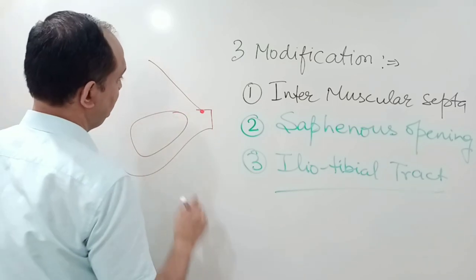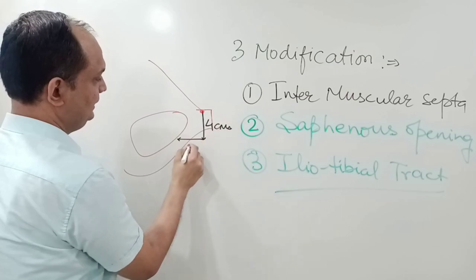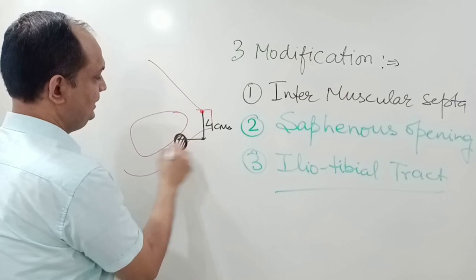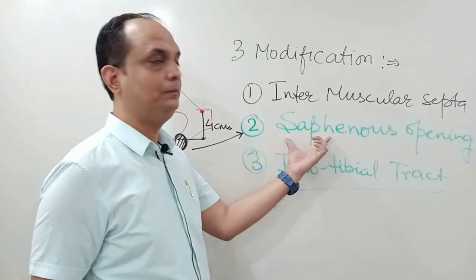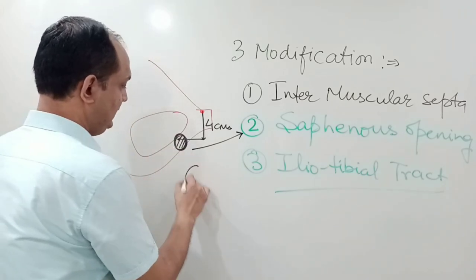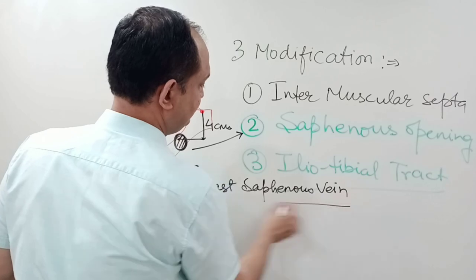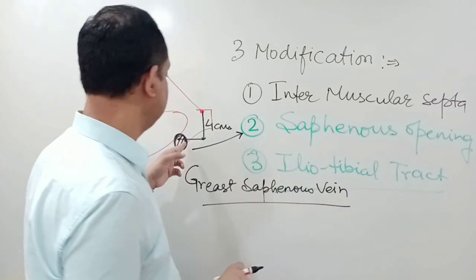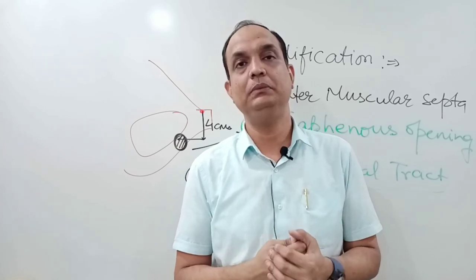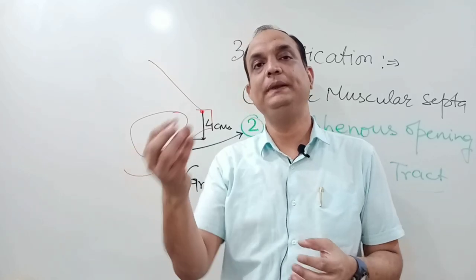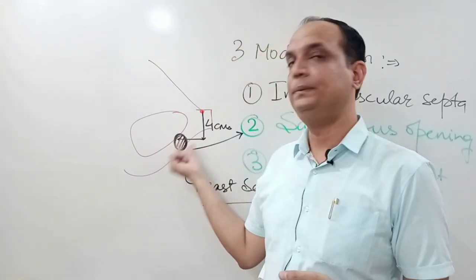On the surface marking of the front of the thigh, 4 cm below and 4 cm lateral to the pubic tubercle, there is an opening in the deep fascia. That opening is known as the saphenous opening. This saphenous opening mainly transmits the great saphenous vein, which passes deep by going through this opening. The great saphenous vein is the largest cutaneous vein of the body, located on the medial side of the lower limb.